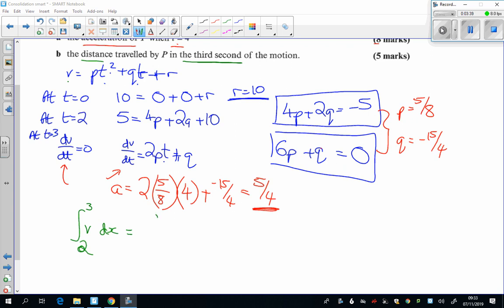It's a bit of thinking there. So what am I doing? I'm integrating between 2 and 3 of, well, what was P? P was 5 eighths T squared minus 15 over 4T plus 10 DT.